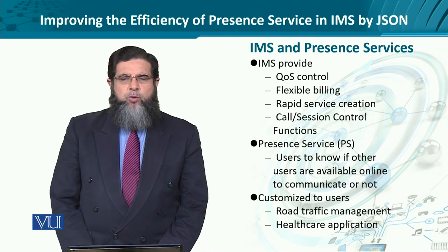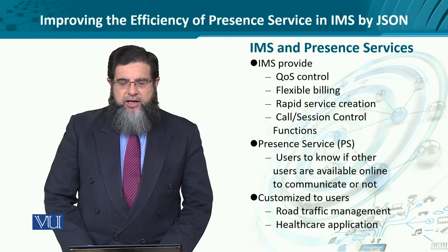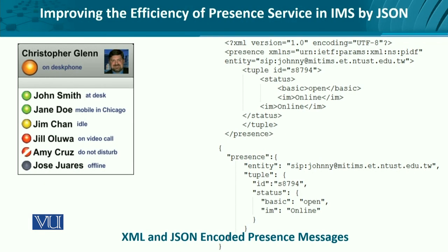Similarly, for healthcare, we are interested in knowing exactly the ward, the bed, and the status of the patient to be looked into. Here is a typical example of a person — in this case, Christopher Glenn. He is available on desktop as a caller and is interested in reaching out to different callees like John Smith, Jane Doe, Jim Chan, etc. Each of these are marked by presence: green for available, red for not available, or do not disturb, and offline.